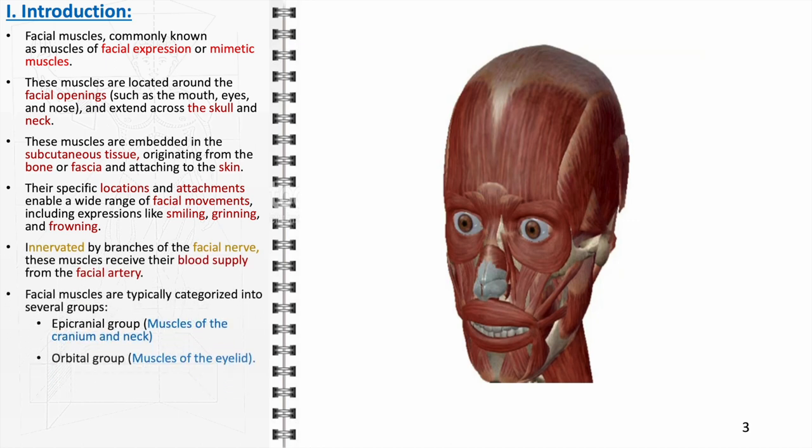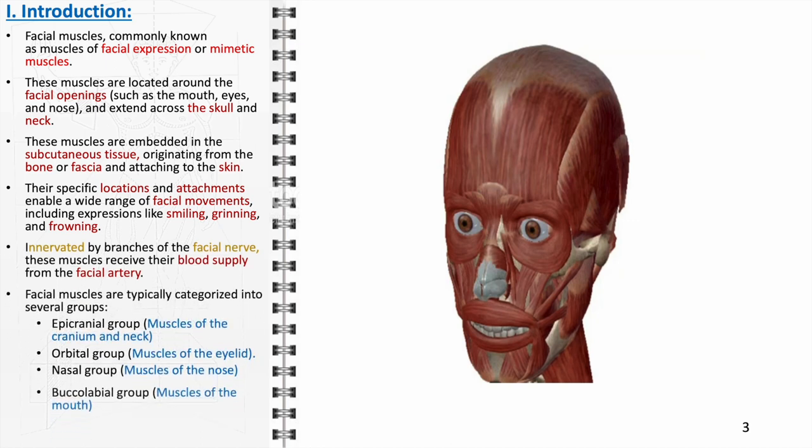Their specific locations and attachments enable a broad range of facial movements, including expressions like smiling, grinning, and frowning. They are innervated by branches of the facial nerve, making them susceptible to conditions such as Bell's palsy, which can cause sudden weakness or paralysis. Their blood supply, primarily from the facial artery, is a critical consideration in surgical procedures involving the face.